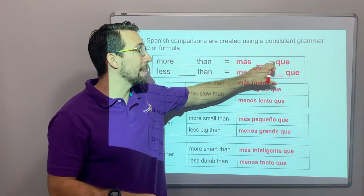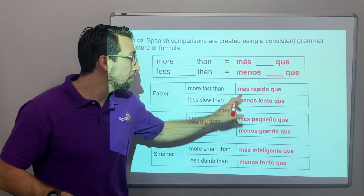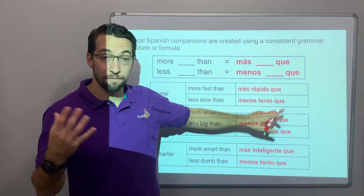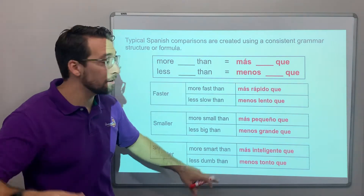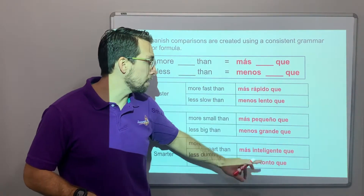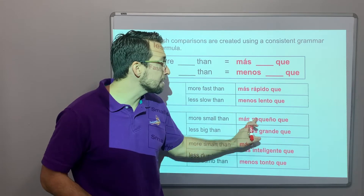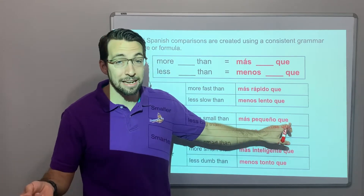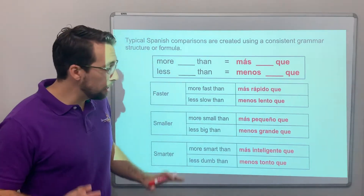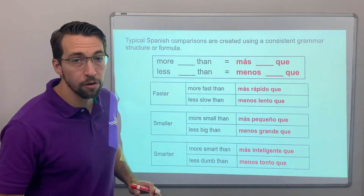Más blank que or menos blank que. More fast than — faster than. Less slow than. More small than — más pequeño que. Okay, we know this. This is a review.